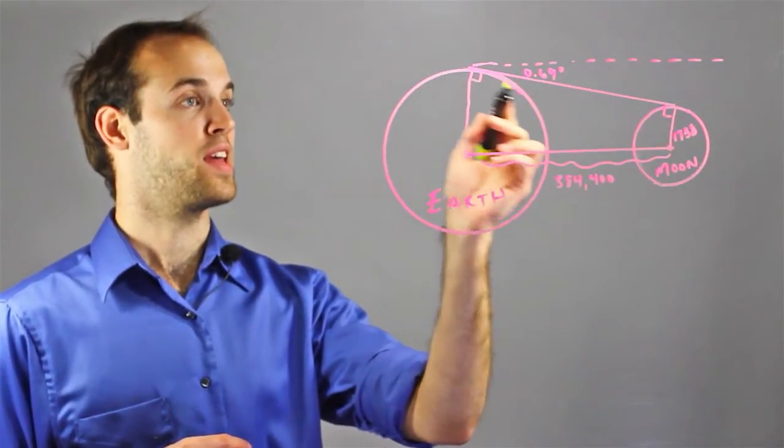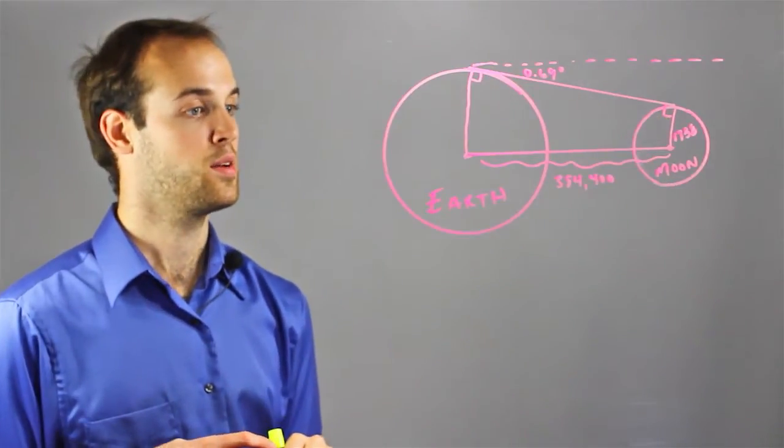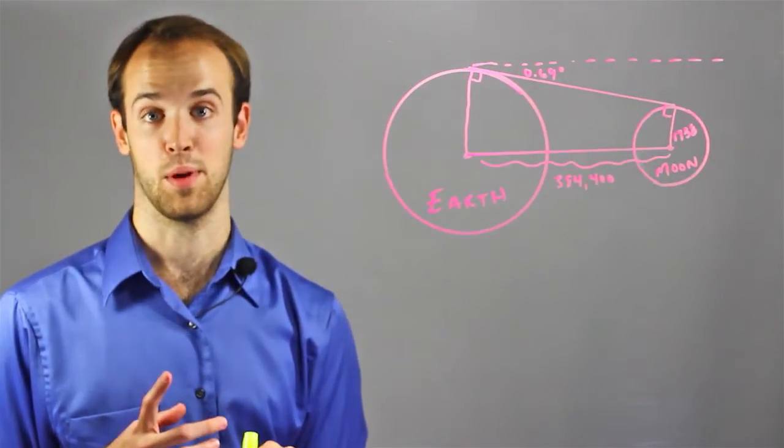And the bottom half of the angle is actually going to be made with a tangent line between the Earth and the Moon, and that's going to be important later.